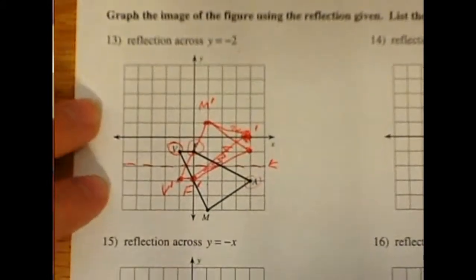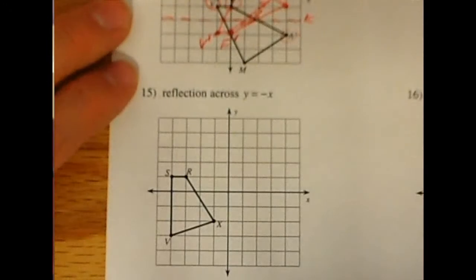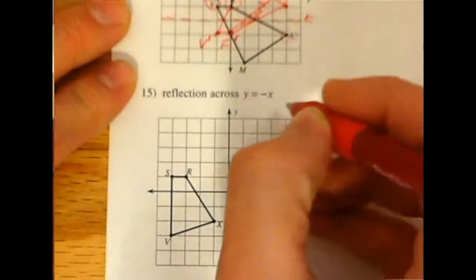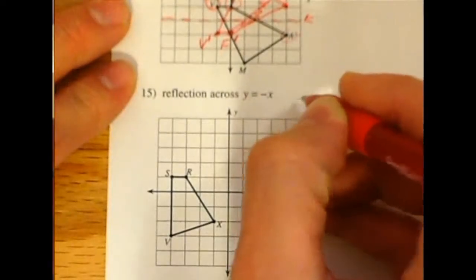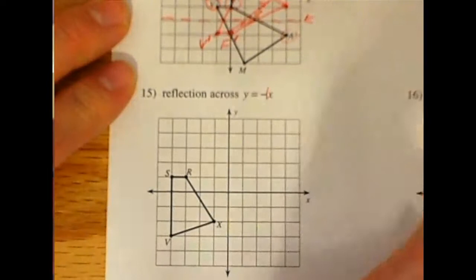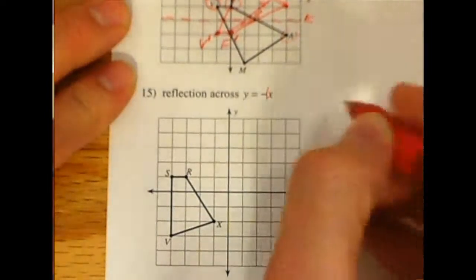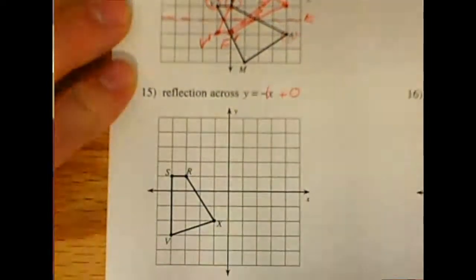I'm just going to take a quick peek at number 15. I'm going to make you do most of this one on your own. Again, when you're reflecting across the line y equals negative x, that's the line with a slope of negative 1. So y equals really negative 1x, and you could even say negative 1x plus 0.